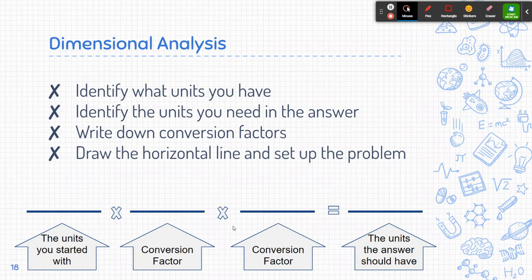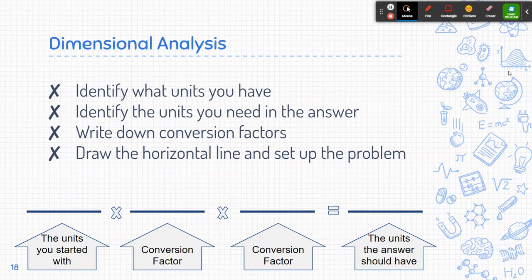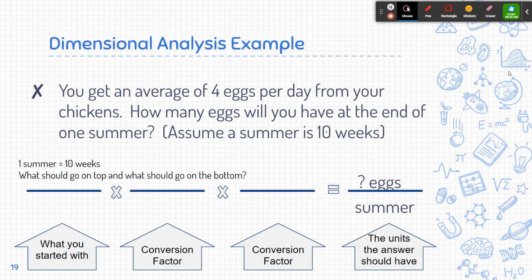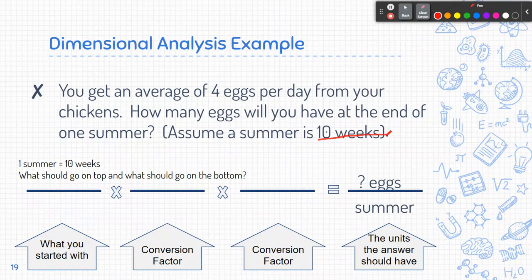You could have one conversion factor, you could have twelve conversion factors, and that all depends on what you're starting with and where you're trying to get to. Here's an example: I get an average of four eggs per day from my chickens. How many eggs will you have at the end of one summer? Let's just say one summer is ten weeks.